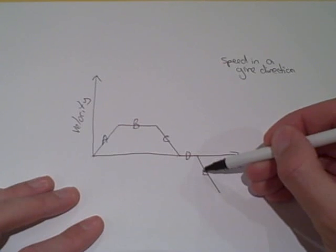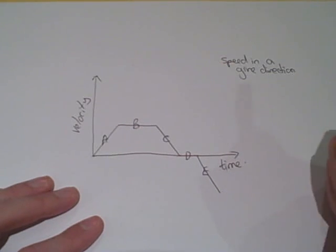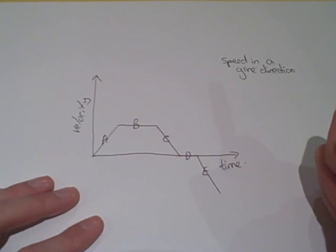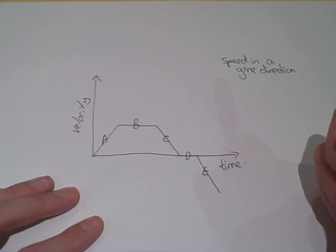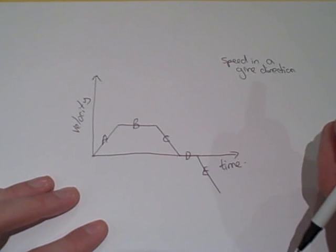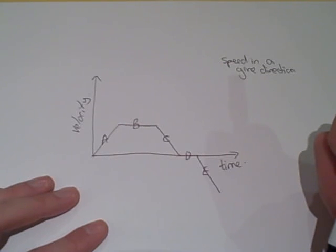Let's see if you were listening. Which option best describes the motion during section B? Hopefully you chose constant speed or constant velocity. Which section shows the object is stationary? Hopefully you chose D. And which section shows the object accelerating and getting faster? Hopefully you chose A.